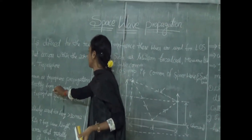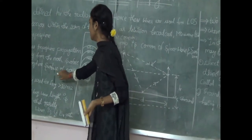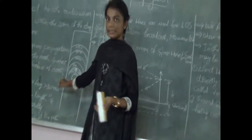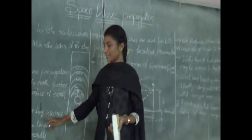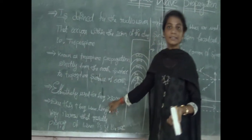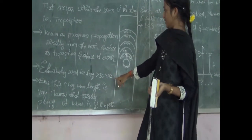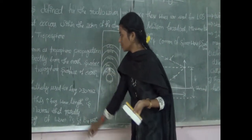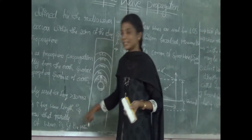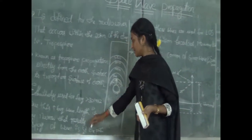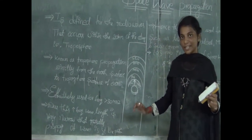The propagation is directly from the earth surface through the troposphere back to the earth. It is effectively used for frequencies more than 30 megahertz. Due to this higher frequency, the wavelength is very narrow and the tropospheric propagation of the wave follows a very straight path.